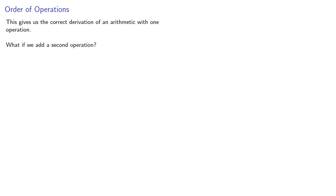So this gives us the correct derivation of an arithmetic with one operation. What if we add a second operation? Or include all four basic arithmetic operations? We'll take a look at that next.